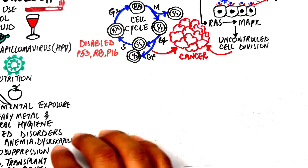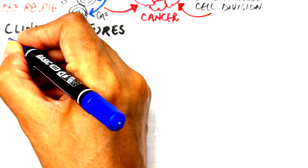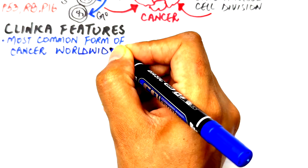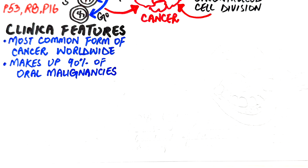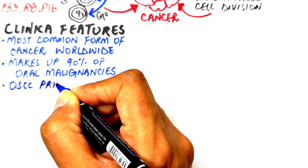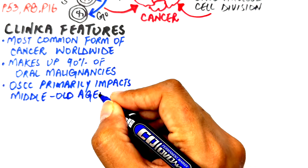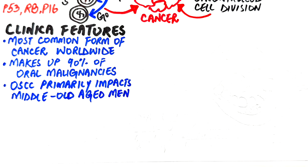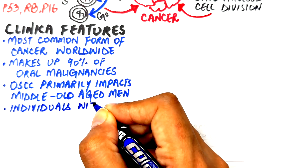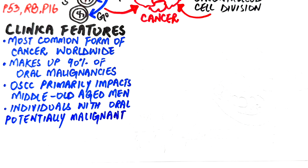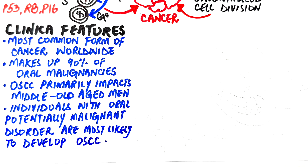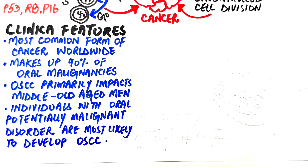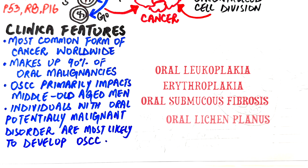Oral squamous cell carcinoma makes up about 90% of oral malignancies and affects appearance, speech, swallowing, and taste perception. It primarily impacts men, especially middle-aged to older men, who are the most at risk. Individuals with oral potentially malignant disorders — including leukoplakia, erythroplakia, oral submucous fibrosis, and oral lichen planus — are more likely to develop oral cancer than those with healthy oral mucosa, since they share many of the same risk factors.